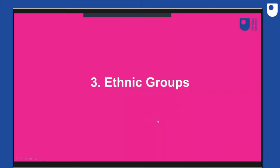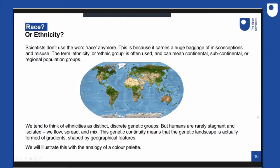It's important to remember that scientists don't use the word 'race' anymore, because it carries a huge baggage of misconceptions and misuse. The term 'ethnicity' or 'ethnic group' is used instead, and can mean many things — continental, subcontinental like British, or regional like Scottish. We tend to think of ethnicities as distinct genetic groups, but humans are not stagnant. They always flow, spread, and mix, forming genetic gradients shaped by geographic features.